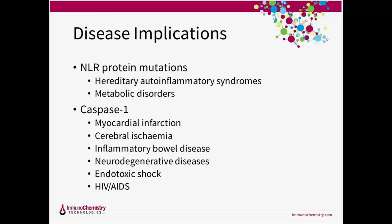While pyroptosis plays an integral functional role in fighting infections through inflammation, chronic inflammation or mutations within the pyroptotic pathway can lead to disease. NLR protein mutations can often lead to incorrect caspase-1 activation associated with different auto-inflammatory syndromes. Expression levels of NLRP3 and thus downstream caspase-1 have also been connected to type 2 diabetes, obesity, and insulin resistance. Caspase-1 is heavily involved in the pathology of many diseases characterized by inflammation and cell death, making it a very attractive therapeutic target, as its inhibition could provide protection against inflammation.